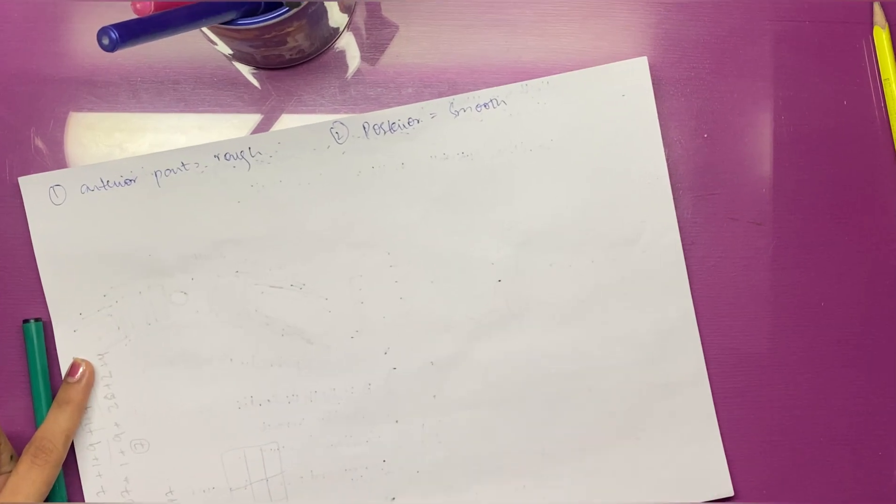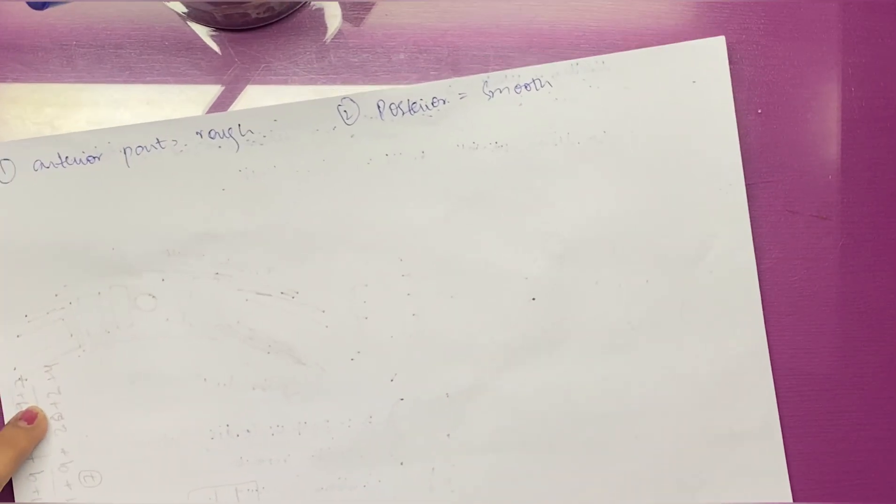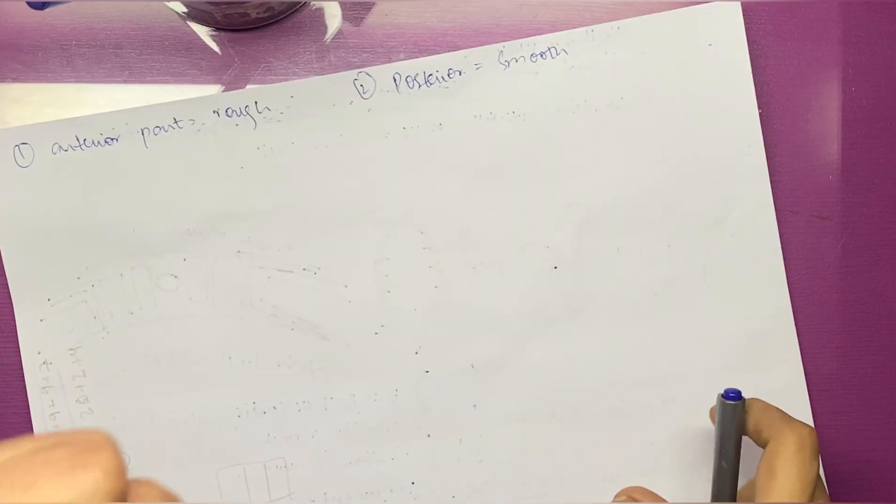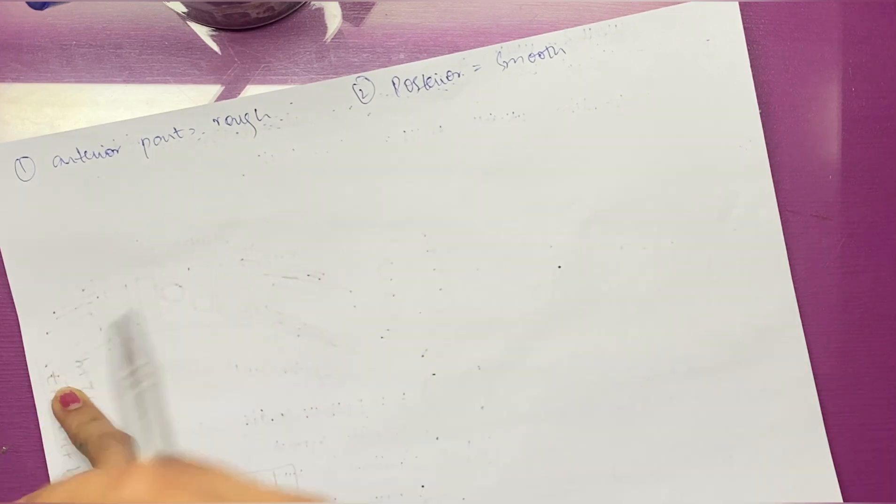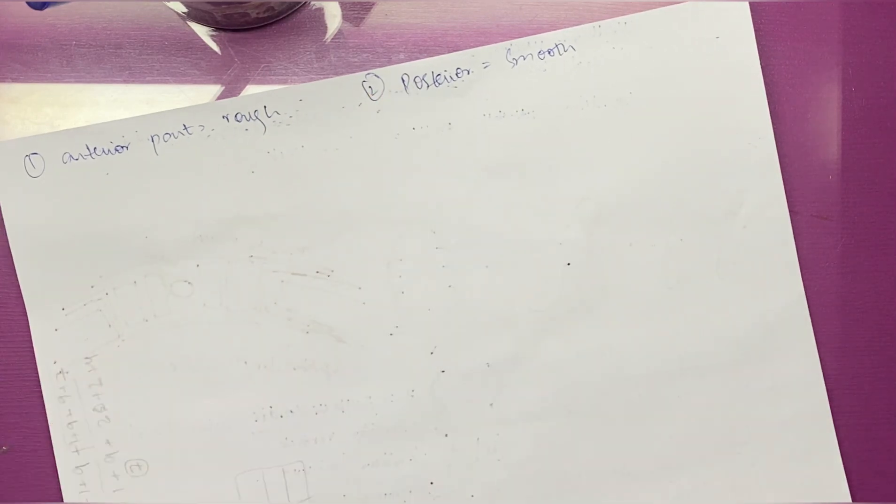One point: whenever somebody is helping you in life, if you have two tasks—a difficult one and an easy one—you always give the easy one to the other person saying 'you can help me out with this' and you do the difficult one yourself. The same happens here with the right atrium and left atrium.